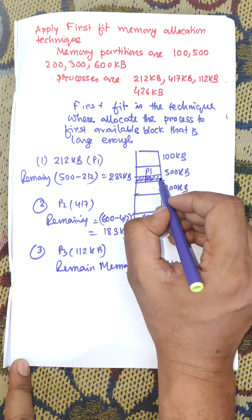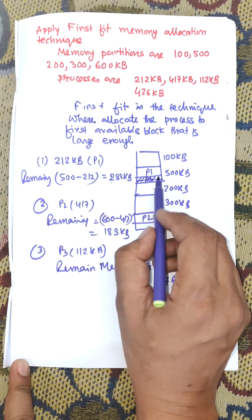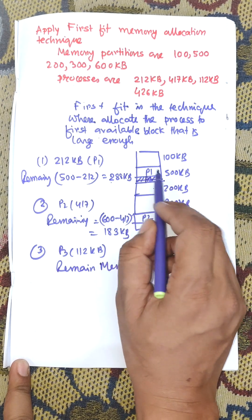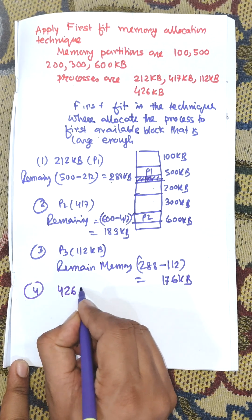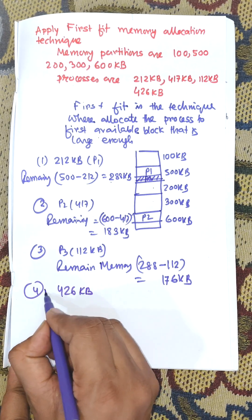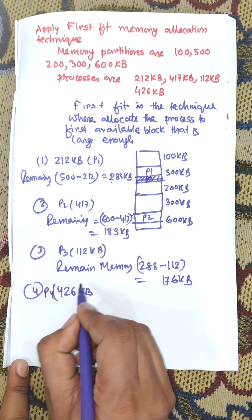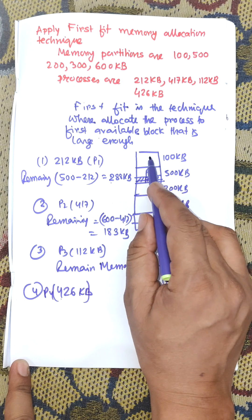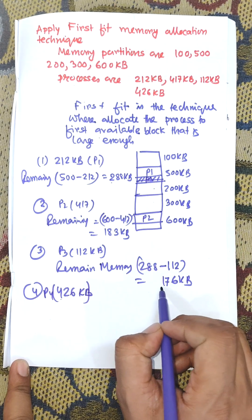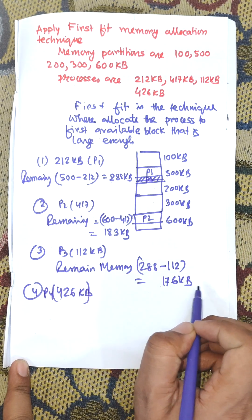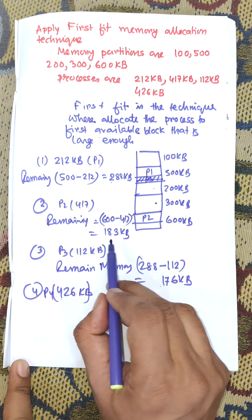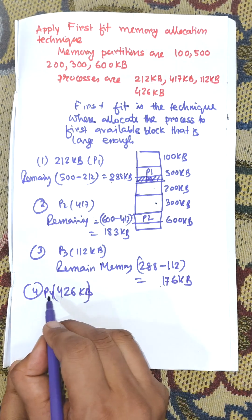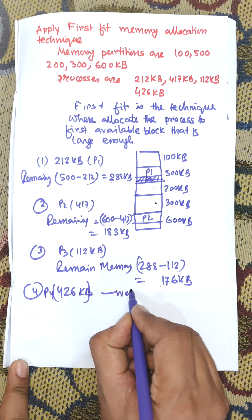So P1 and P3 are both allocated within the 500 KB memory block. Next, process P4 is 426 KB. It cannot be allocated within 100 KB, 176 KB, 200 KB, 300 KB, or 183 KB. Therefore, P4 waits for execution.